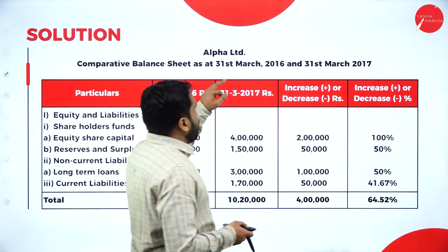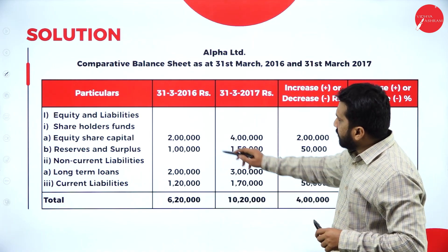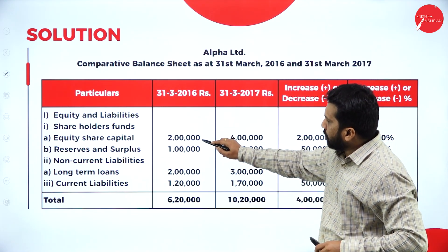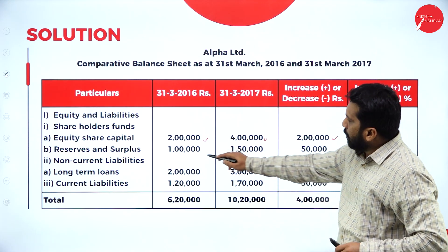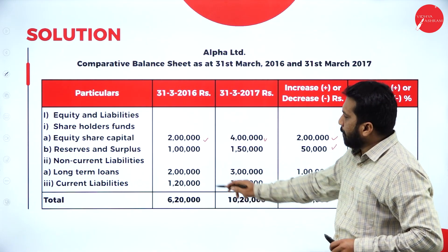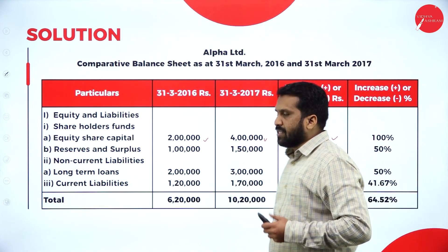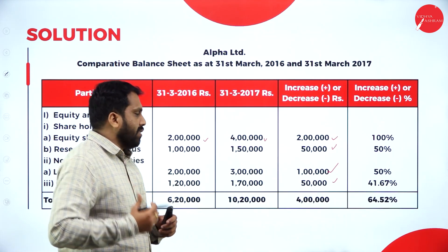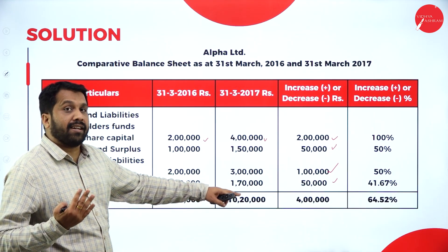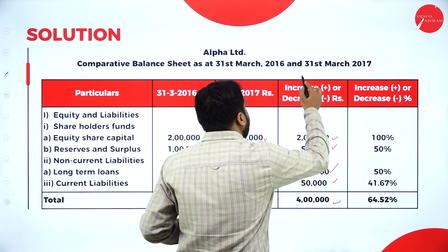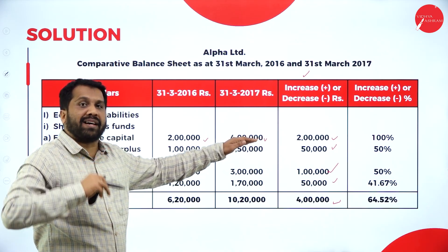Comparative balance sheet as at 31st March 2016 and 2017. Whatever liabilities are there, we have written all the liabilities. Last year it was 2 lakh, this year it is 4 lakh. What is the difference? 4 minus 2, the difference is 2 lakh. 1 lakh and 1 lakh 50 — there is 50,000. 2 lakh and 3 lakh — there is 1 lakh. 1 lakh 20 and 1 lakh 70 — there is 50,000. There is a variation. Even for total also — it was 6 lakh 20, now it is 10 lakh 20, there is an increase of 4 lakh. This we call it as increase or decrease. If it is a decrease, write it as a negative value in brackets with a minus sign.